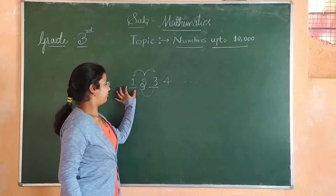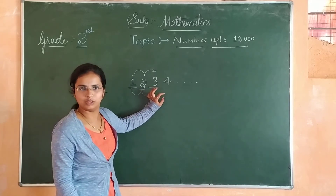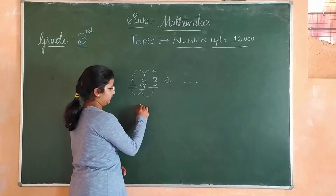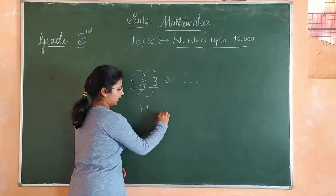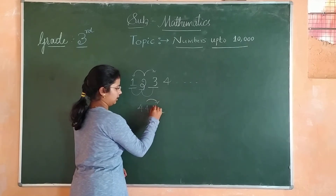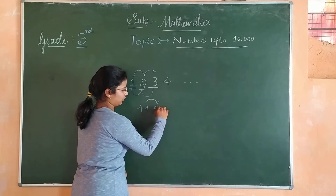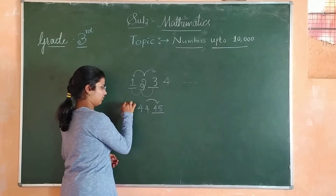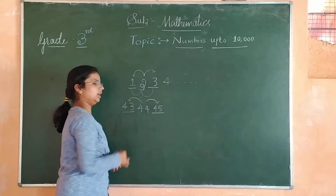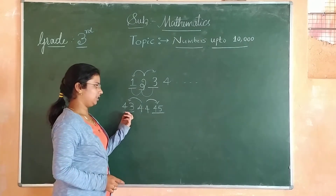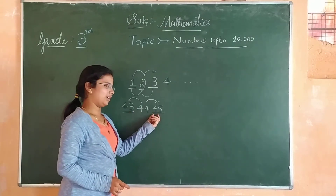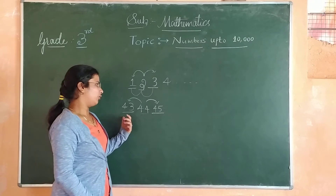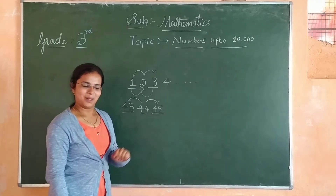Now I will repeat this using a two-digit number, like 44. The after number of 44 is 45, which we get by adding 1 to the given number, and the before number is 43, which we get by subtracting 1. So 43 is the before number of 44, 45 is the after number of 44, and 44 is the between number of 43 and 45.